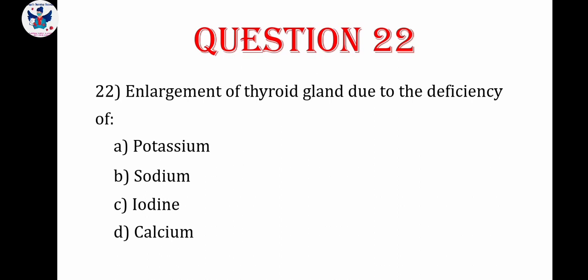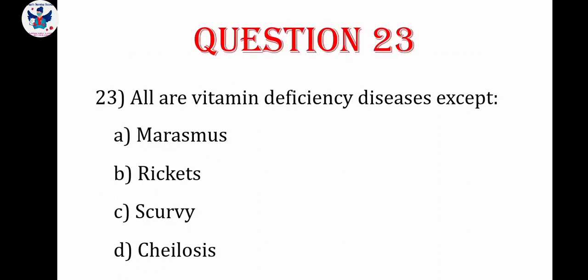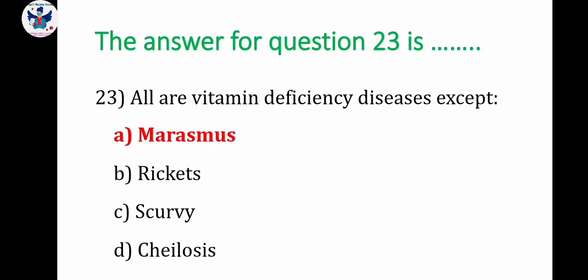Question number 22: enlargement of thyroid gland is due to deficiency of — potassium, sodium, iodine, or calcium. The correct answer is iodine. If there is deficiency of iodine, it will lead to thyroid gland enlargement. Question number 23: all vitamin deficiency diseases except — options are marasmus, rickets, scurvy, kylosis. Rickets, scurvy, and kylosis are vitamin deficiency diseases. Marasmus is a protein-energy malnutrition disorder, so the correct answer is marasmus.